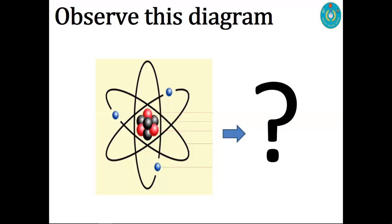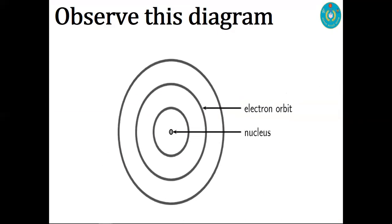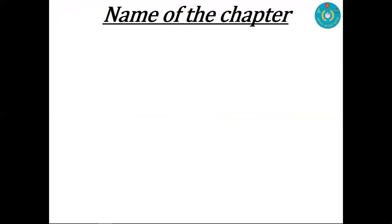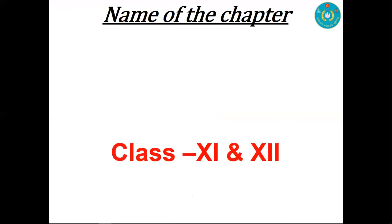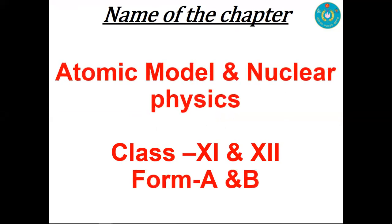Think about what you have observed in this diagram, and observe this second diagram too. By observing these two diagrams, you can guess the name of the chapter. This is our third lecture, and this is a review class because we have taken two classes previously. We are going to overview the whole chapter — Atomic Model and Nuclear Physics.